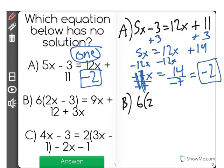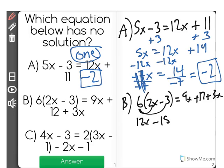B says 6 times 2x minus 3 equals 9x plus 12 plus 3x. We're going to start by simplifying this out. We're going to expand. 6 times 2x is 12x. 6 times negative 3 is negative 18. Then we have 9x plus 3x is 12x here, plus 12.